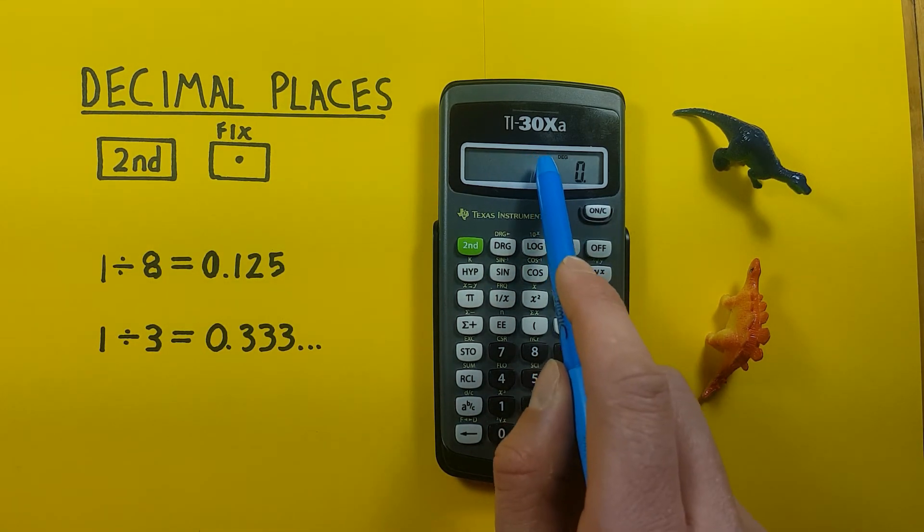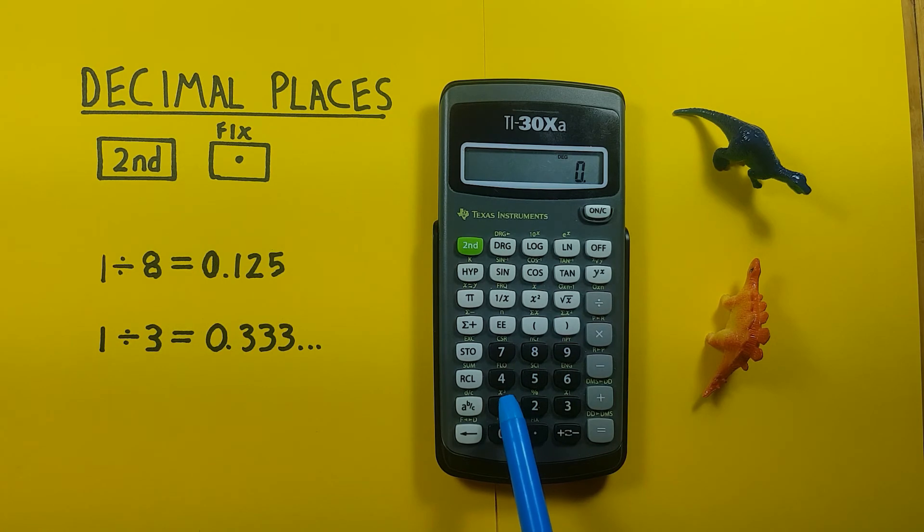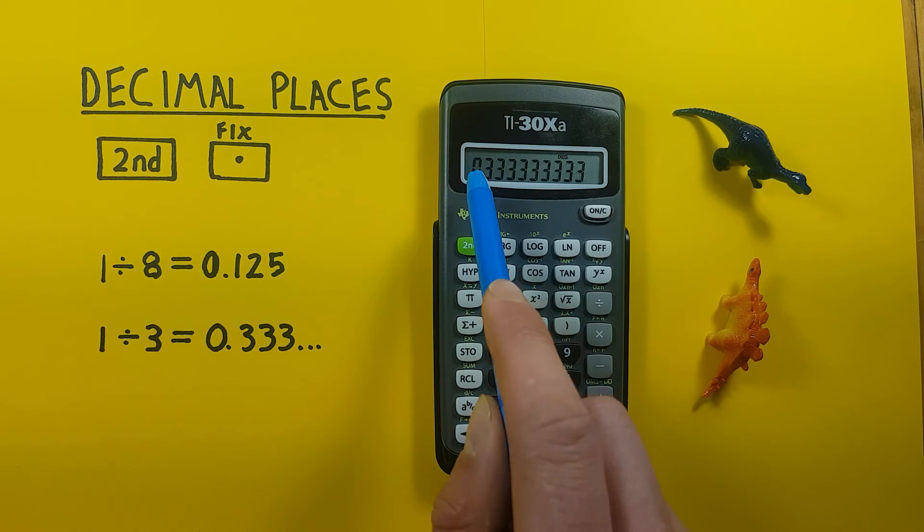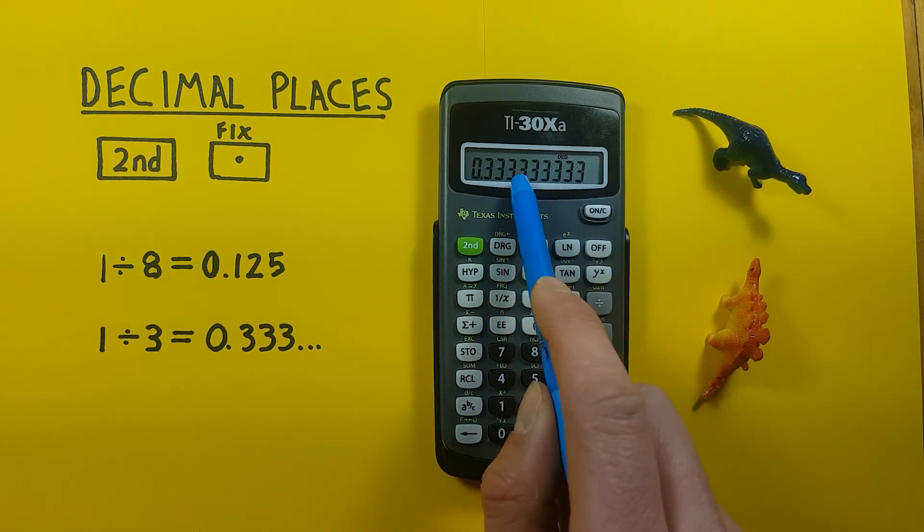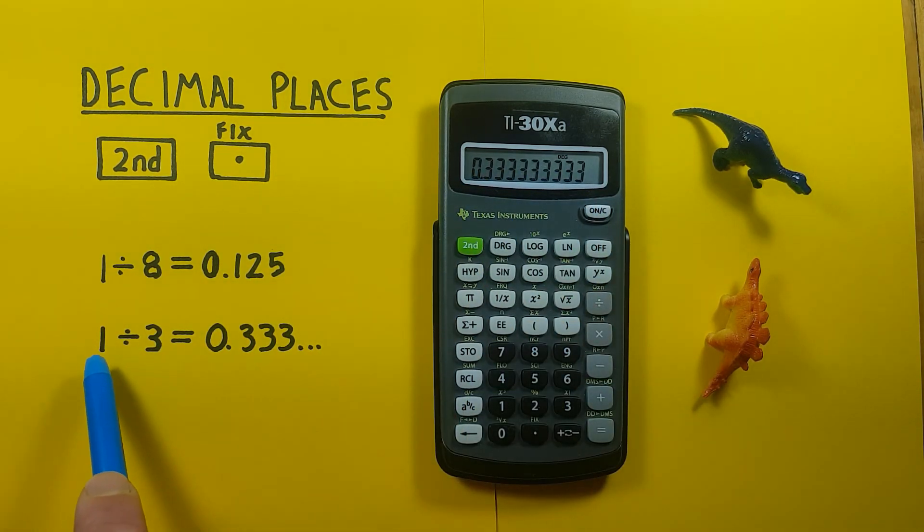You can see the fix is now gone. If we do a calculation like 1 divided by 3, we get all of our decimal places as we should, because we know 1 divided by 3 is 0.3333 etc.